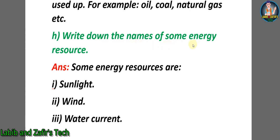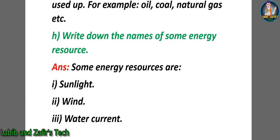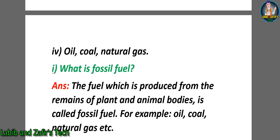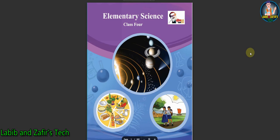h) Write down the names of some energy resources. Answer: Some energy resources are sunlight, wind, water current, oil, coal, and natural gas. i) What is fossil fuel? Answer: The fuel which is produced from the remains of plant and animal bodies is called fossil fuel; for example, oil, coal, natural gas, etc. j) What is natural resource conservation? Answer: Protecting natural resources and using them in a planned manner is called natural resource conservation. That's all for today — hope you liked the video. If you did, please like, comment, share, and subscribe to our channel.